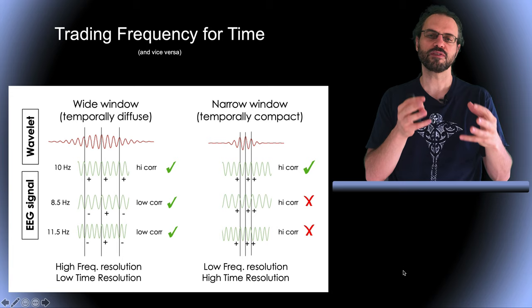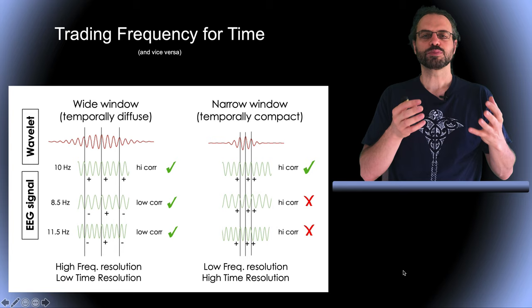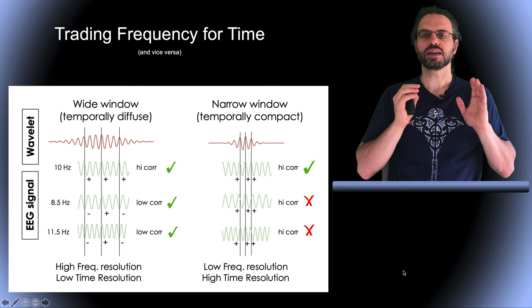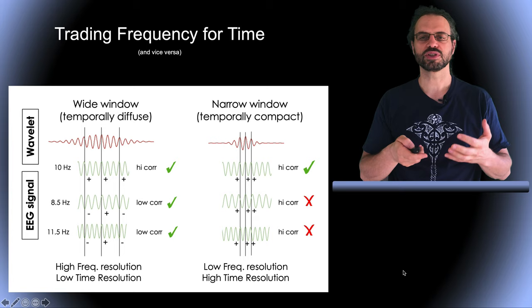Thus, the wide window wavelet is better able to localize the amplitude of the signal in frequency, but less able to localize the signal in time, compared to the narrow window wavelet which has the opposite properties.